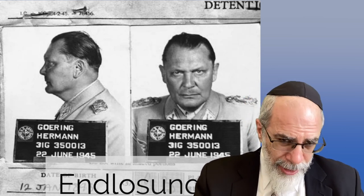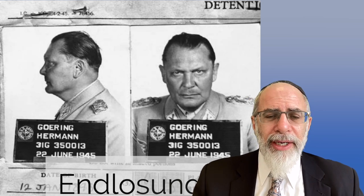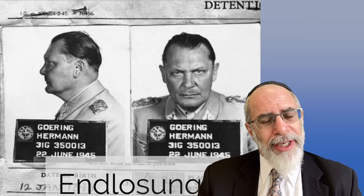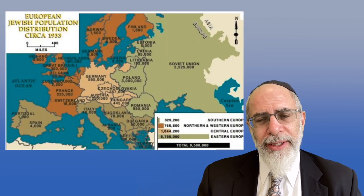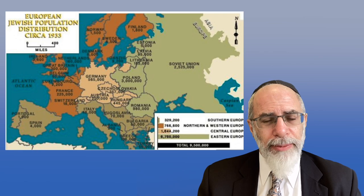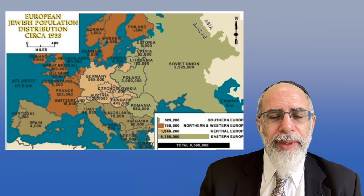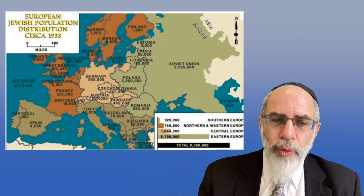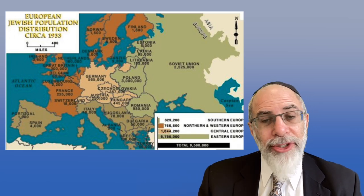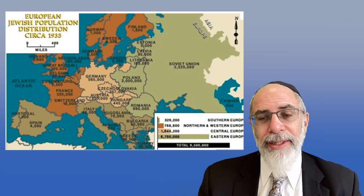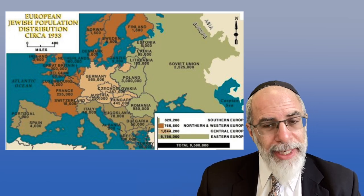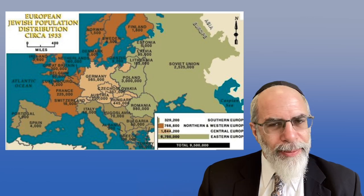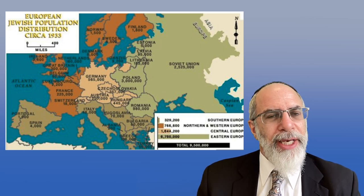Looking at the historical data, the Jews in Europe at this time — as you can see on this map from the United States Holocaust Memorial Museum — are spread out across Europe. The great mass of them are in Eastern Europe, particularly in the Soviet Union and Poland. Germany has only about half a million Jews.